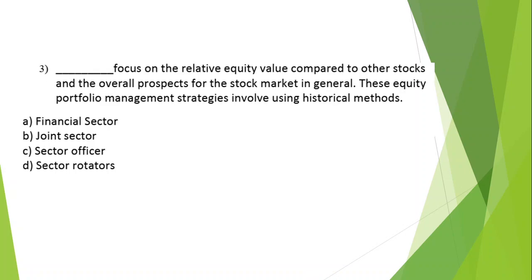Question 3: Dash focuses on the relative equity value compared to other stocks and the overall prospects for the stock market in general. These equity portfolio management strategies involve using historical methods. Options: A) financial sector, B) joint sector, C) sector officer, D) sector rotators. The answer is option D — sector rotators.